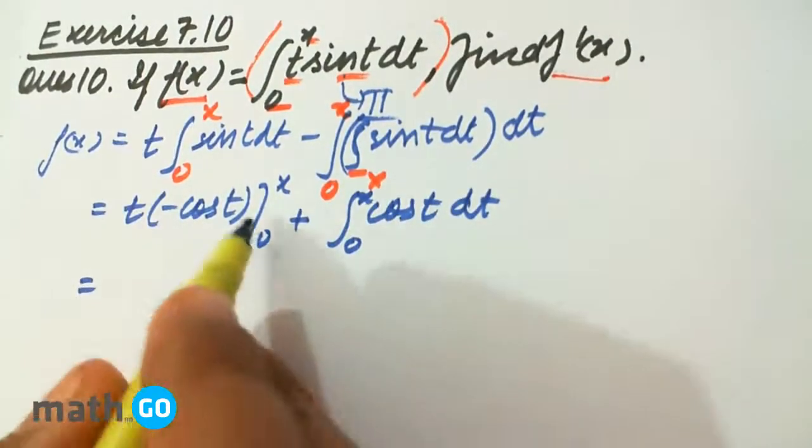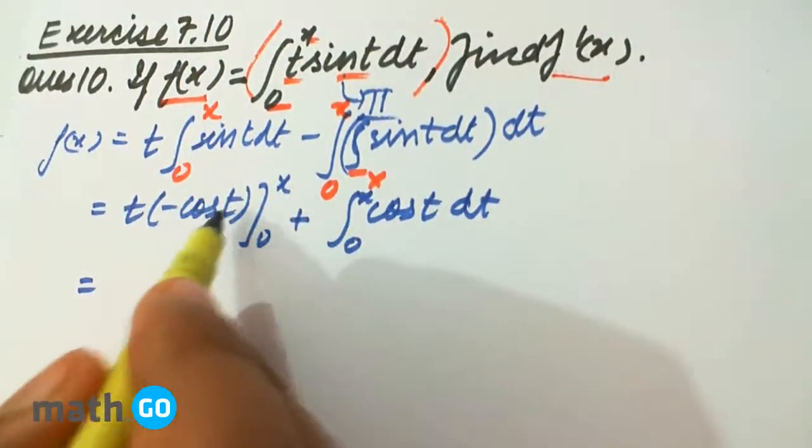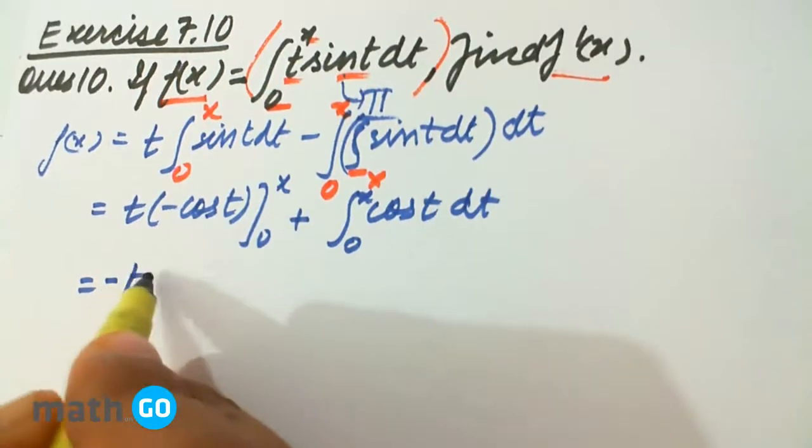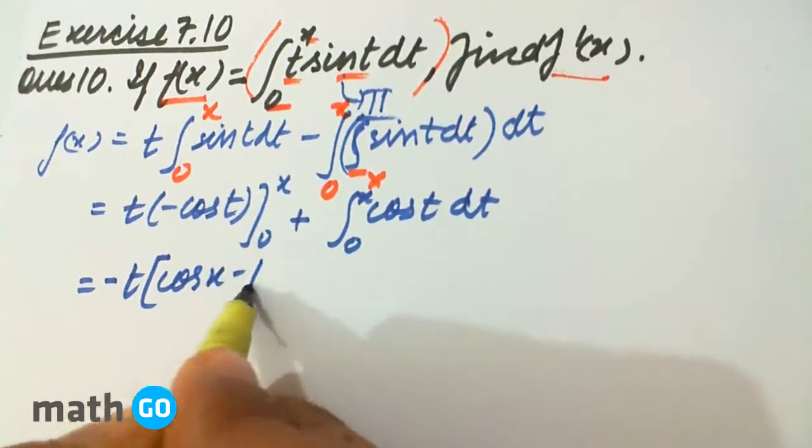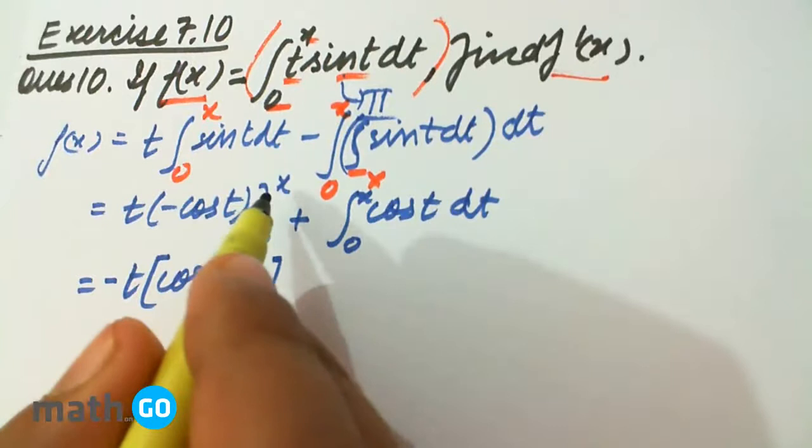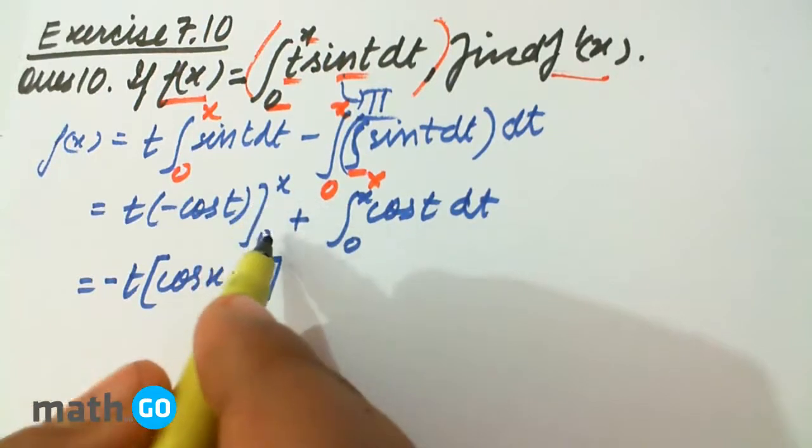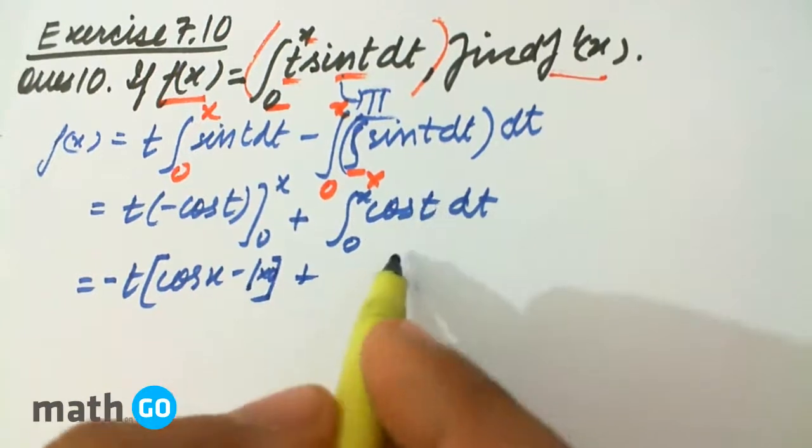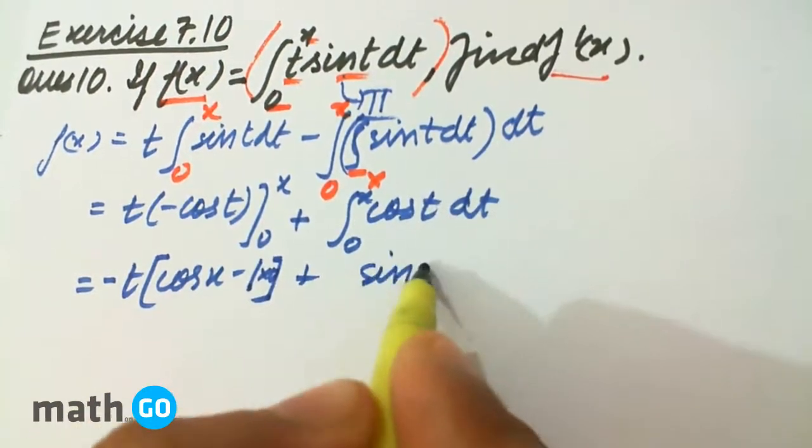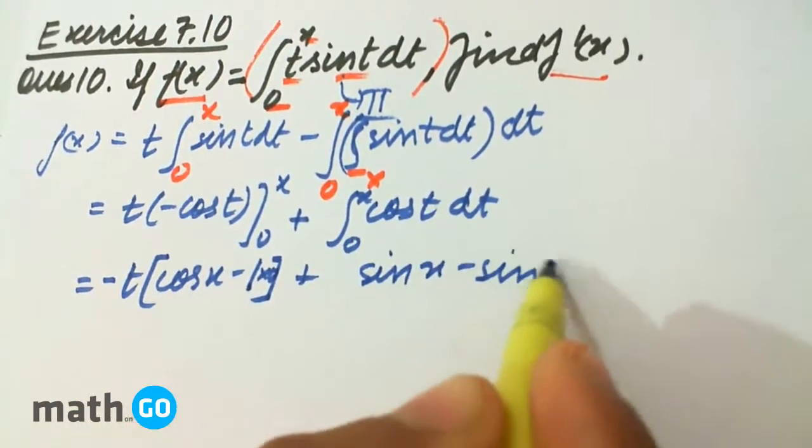This is nothing but x. So it will be minus t into cos x minus 1 into 0. Plus its integration is sin t, so sin x minus sin 0.